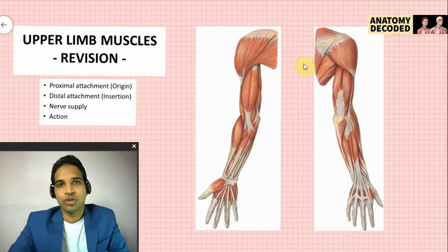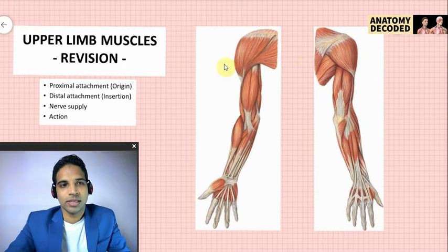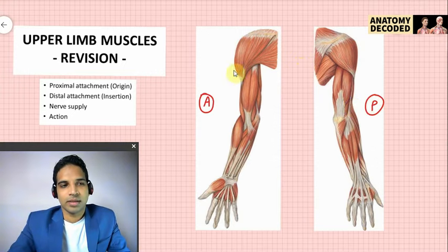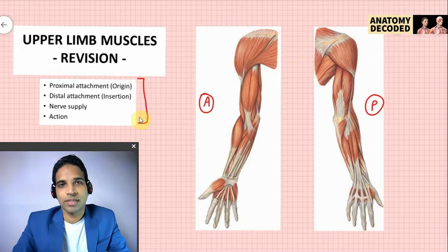Hello everyone, welcome to this session on muscles of the upper limb. In this session, we will be revising all the muscles of the upper limb. We can see the right upper limb viewed from the anterior aspect, and from the posterior aspect. When we study any muscle of the upper limb, we study under specific headings, and we will try to cover these headings for each muscle.